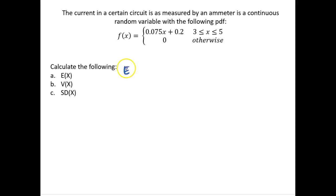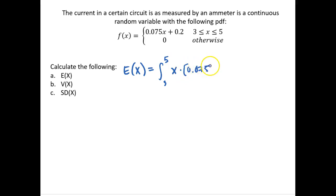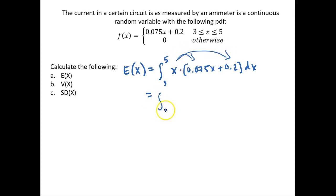The expectation of a continuous random variable is equal to the integration over the sample space — from the lower bound up to the upper bound — of x times our PDF. So x times 0.075x plus 0.2 dx. Distributing the x through, we get the integration from 3 to 5 of 0.075x squared plus 0.2x dx.